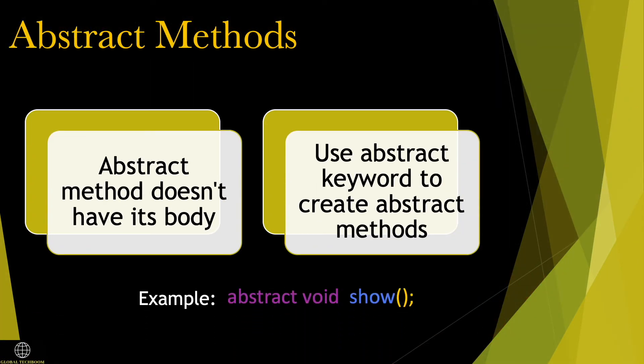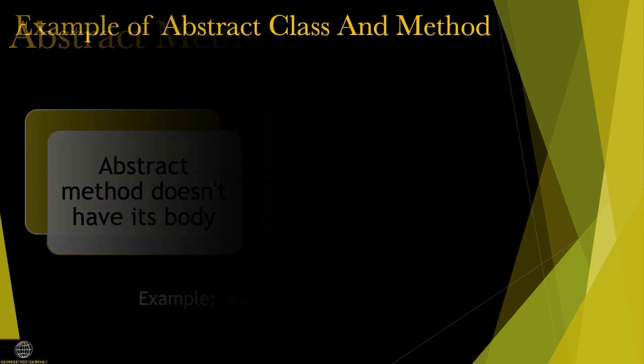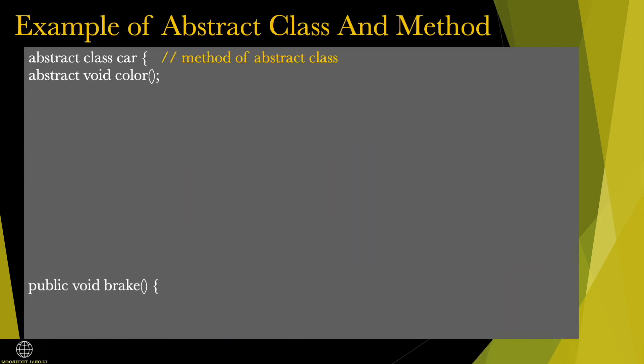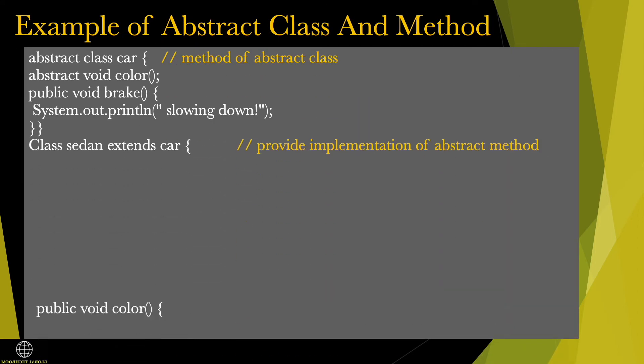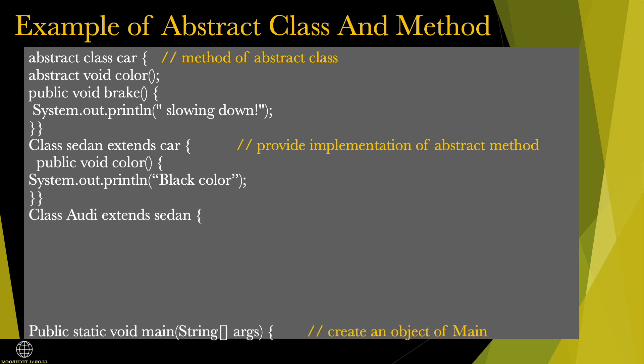Abstract methods do not have a body. Use the abstract keyword to create abstract methods. In this example, the abstract method show does not have any method body. If one class has an abstract method then that class needs to be declared abstract.